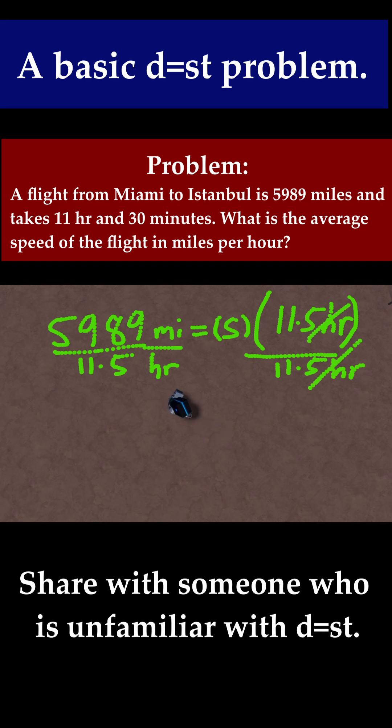And if you do 5,989 divided by 11.5, you're going to get that. That's equal to 520.8 miles per hour. I'll just write that as MPH. And that's it. That's the average speed of the plane on this trip.